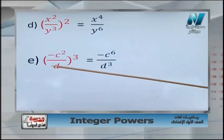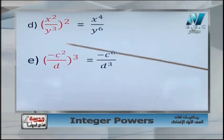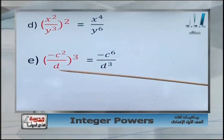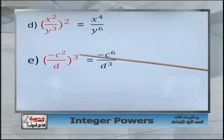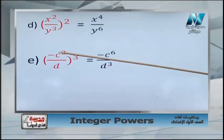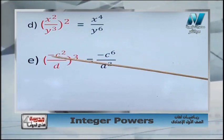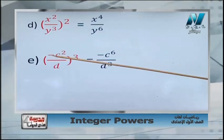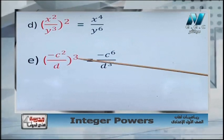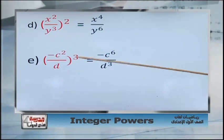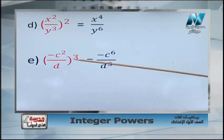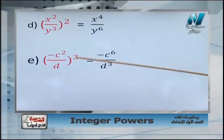Next example: negative c squared over g, all to the power 3. Here we have a negative sign. Look at the power — the power is 3. 3 is an odd number. If we have an odd power, the negative sign stays; if we have an even power, the even power cancels the sign. Since 3 is odd, the sign remains.